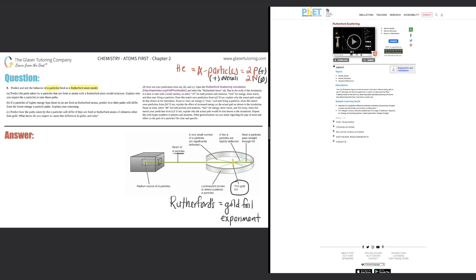So you have overall positive particles being shot at a thin piece of gold foil. In Rutherford's experiment, he noticed that the majority of them pass straight through — most alpha particles pass straight through — but some of them get deflected. A few alpha particles are slightly deflected and some bounce back, but the majority go straight through.